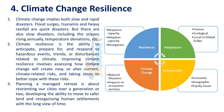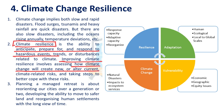The next issue is climate change resilience. There is discussion about net zero emissions, which means carbon emissions and absorption need to be balanced. As a response to climate change, one strategy is to build resilience. Resilience means the ability to anticipate, prepare for, and respond to the hazardous events of climate change. Improving climate resilience involves assessing how climate change will create new or altered risks, planning for managing retreat, and reorienting urbanization planning. Resilience includes response capacity, adaptive capacity, and reorganization capacity. Adaptation leads to resilience to climate change.